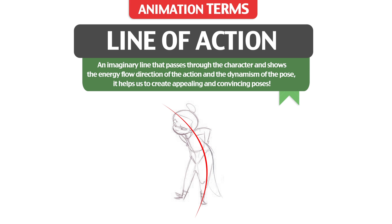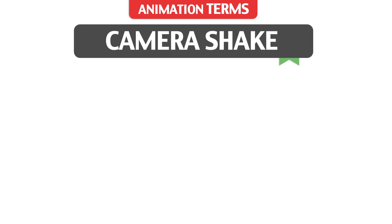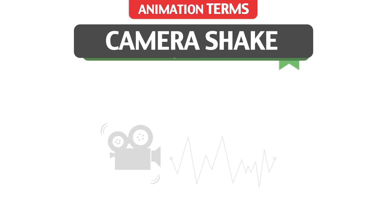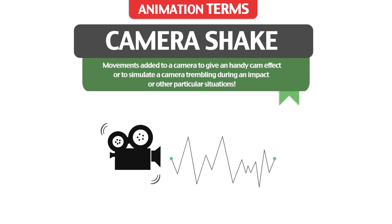Line of Action: an imaginary line that passes through the characters and shows the energy flow, direction of the action, and the dynamics of the pose. It helps us to create appealing and convincing poses. Camera Shake: movement added to a camera to give a handheld effect or to simulate a camera trembling during an impact and other cases.